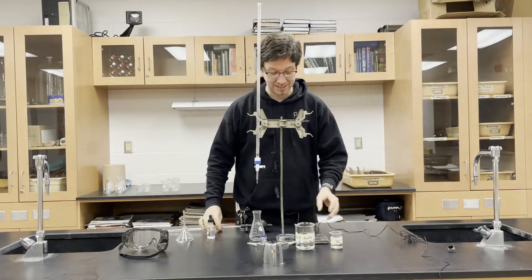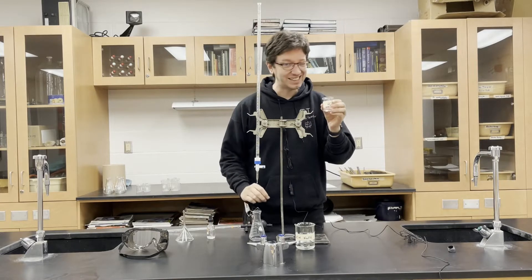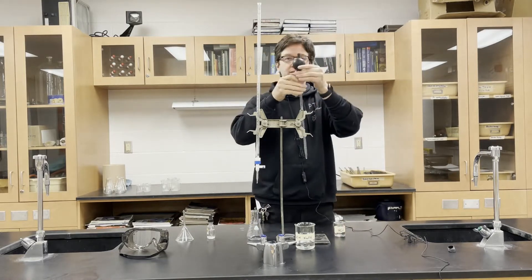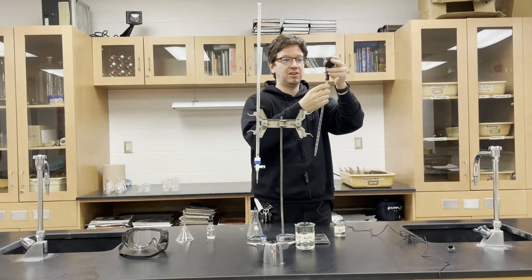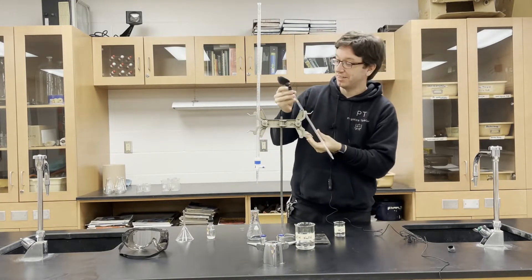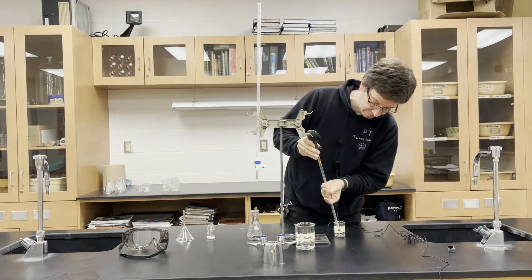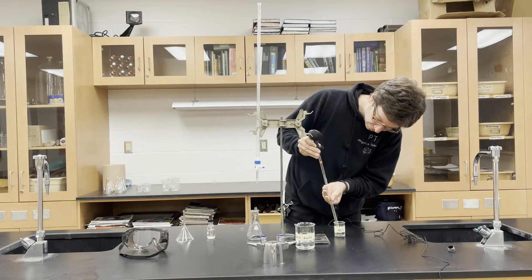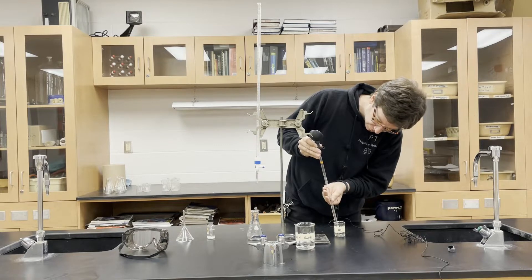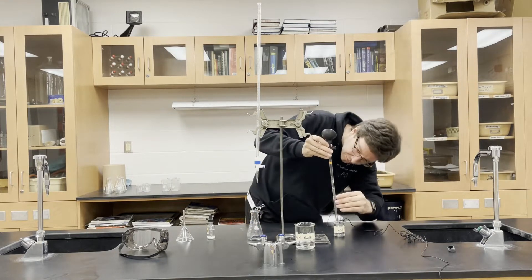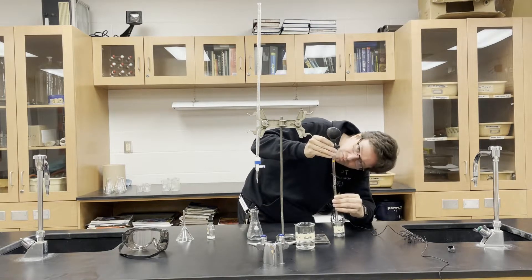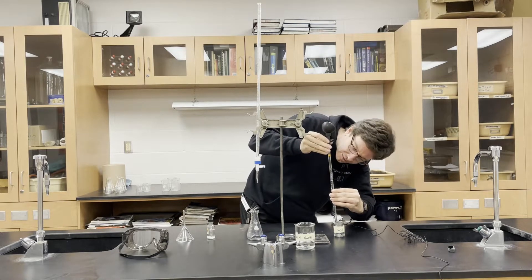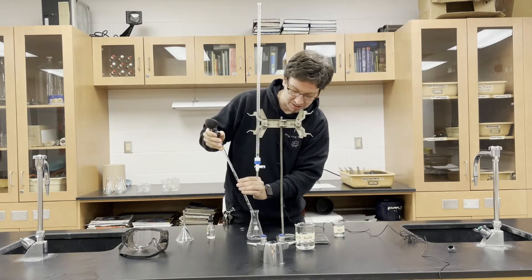The first step is to take our unknown hydrochloric acid and I want exactly 10 milliliters inside of our flask, so we're going to use the pipette. This is a 10 milliliter pipette. I got a little bit too much so I can expel a little bit. There's exactly 10 milliliters and I'll put it into our flask.